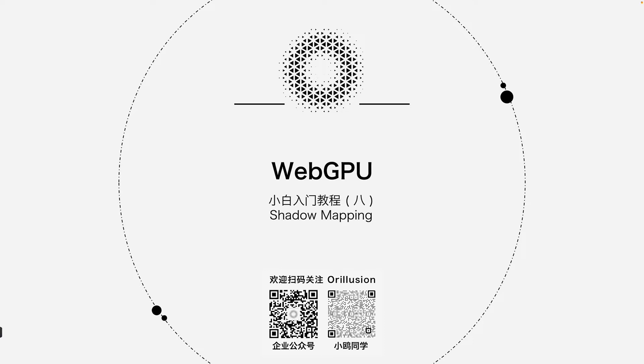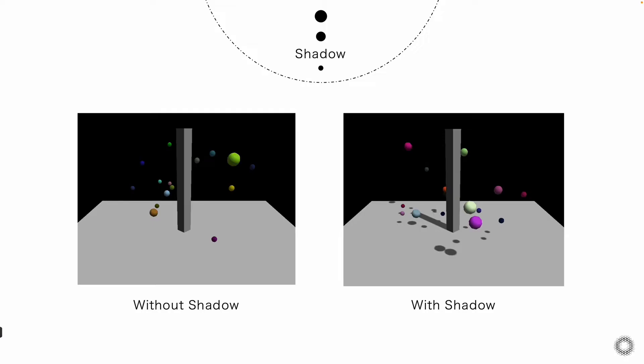Shadows will make the light effect more realistic. So what is shadow? It is somewhere the light can't reach. It is easier to express the spatial relationship between objects. For example, the red example with a shadow. Apart from the spatial relationship, the 3D structures of the sphere and cubes is more clear.